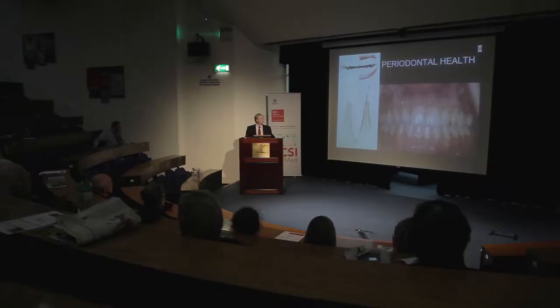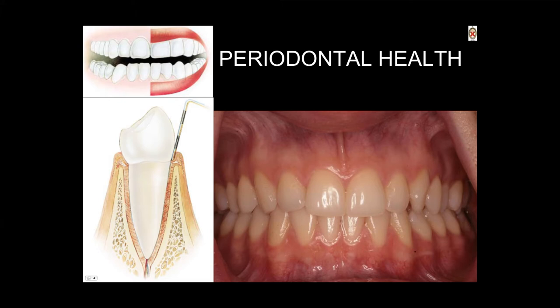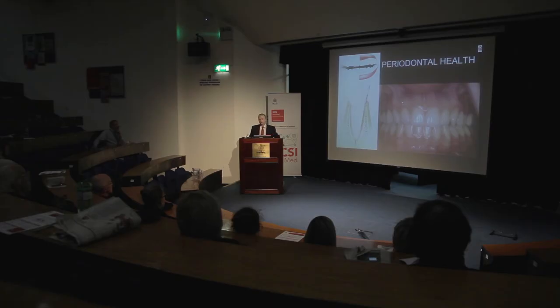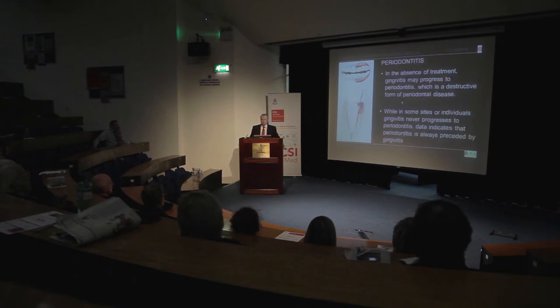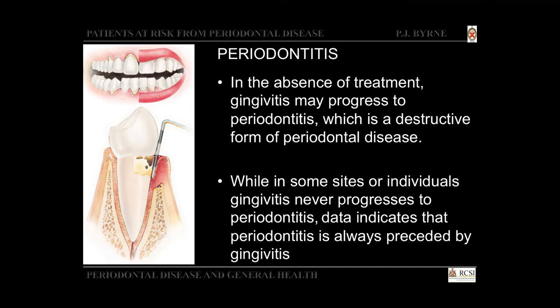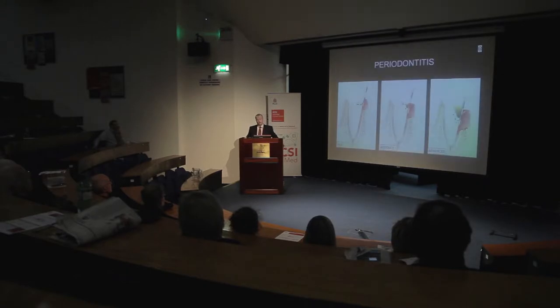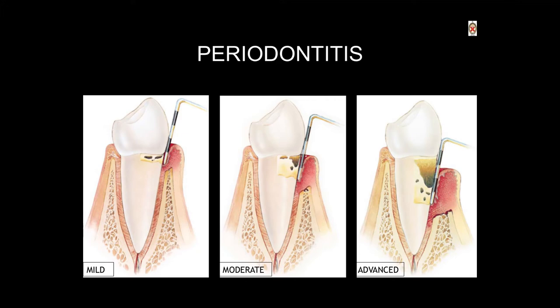Periodontal health is where we have a lack of inflammation and normal functioning aesthetic dentition. Gingivitis is inflammation of the gum tissue and it's usually a non-destructive periodontal disease. Periodontitis, on the other hand, is basically a destructive component where the bone and the attachment of the soft tissues is lost from the tooth. In periodontitis it can be very mild, moderate, severe, or extreme — extreme to the point where the teeth are lost — and periodontitis can be chronic or it can be aggressive.